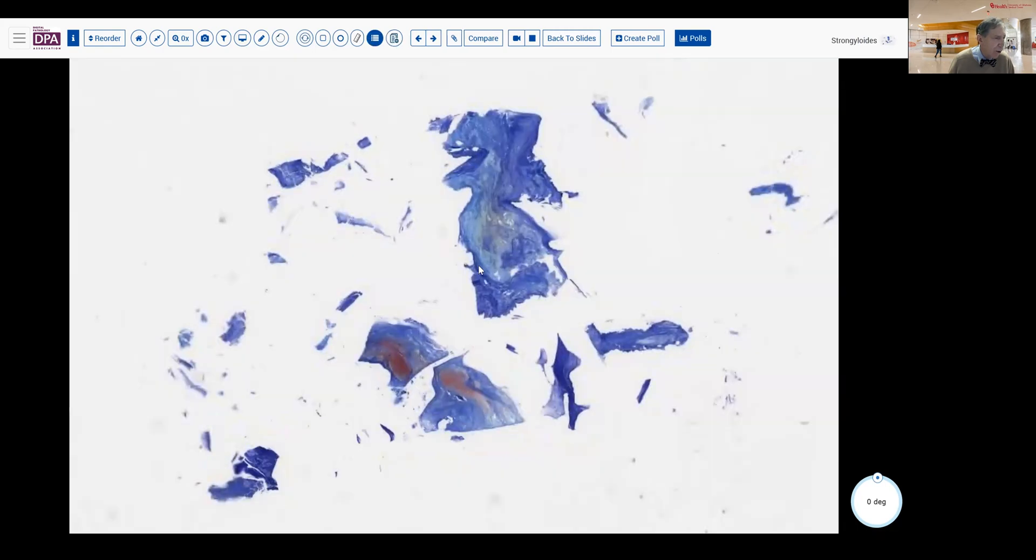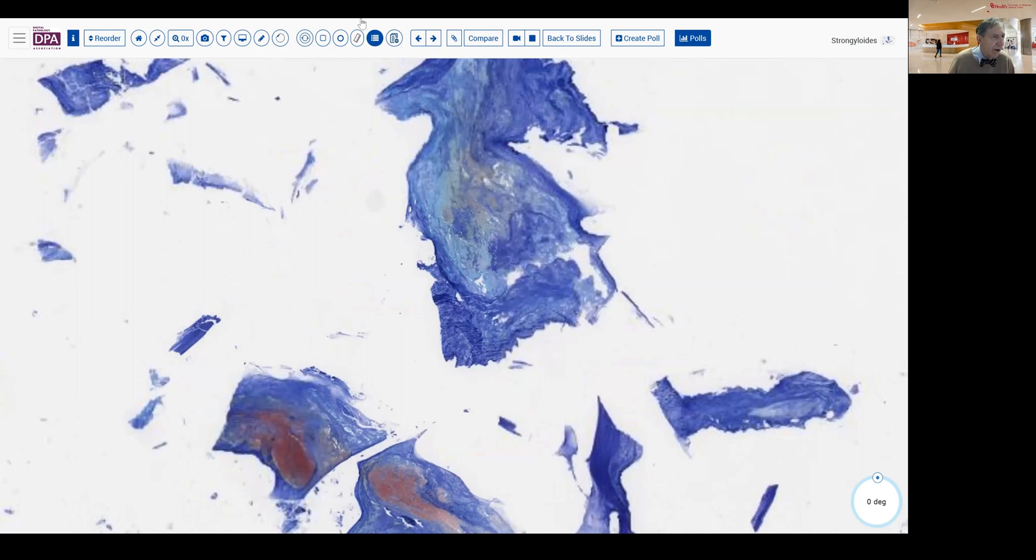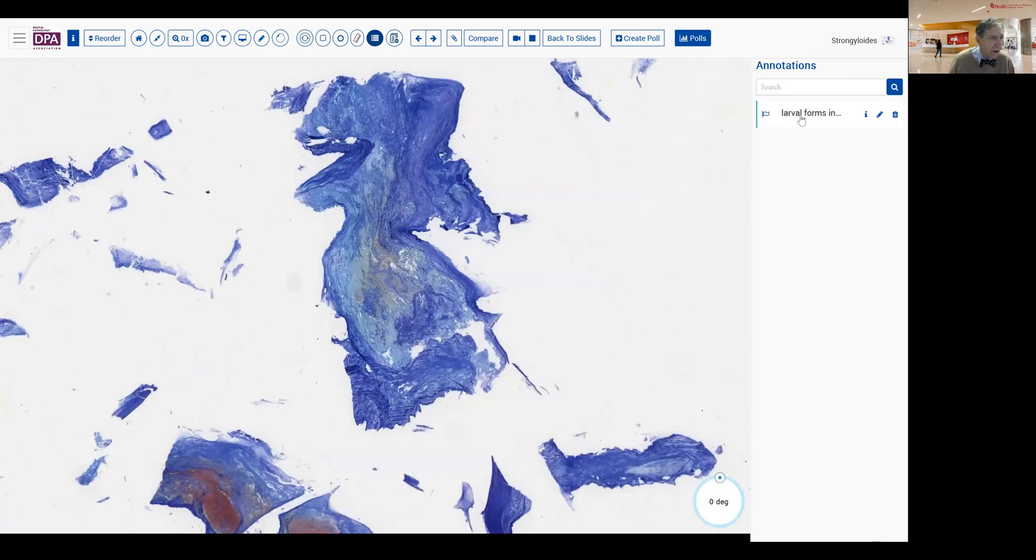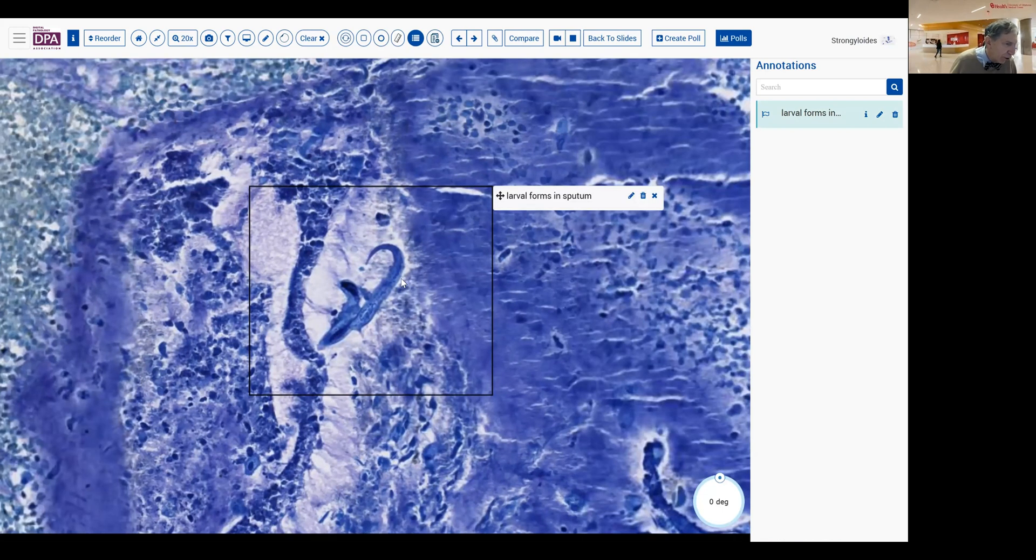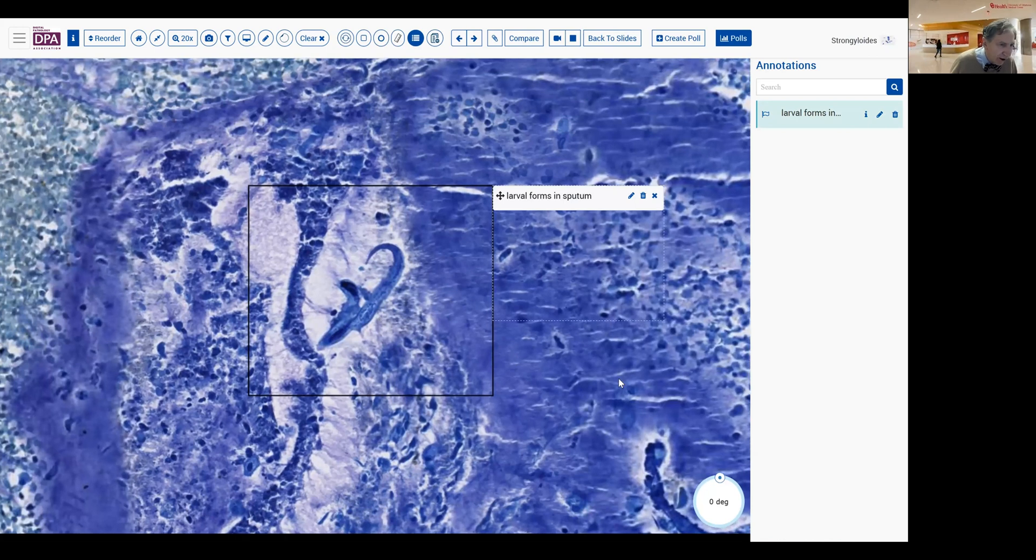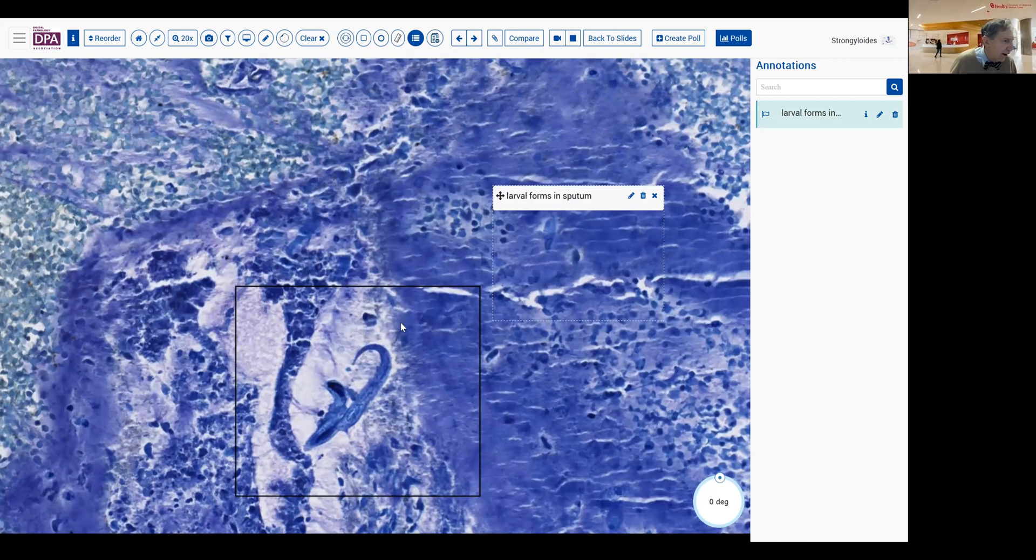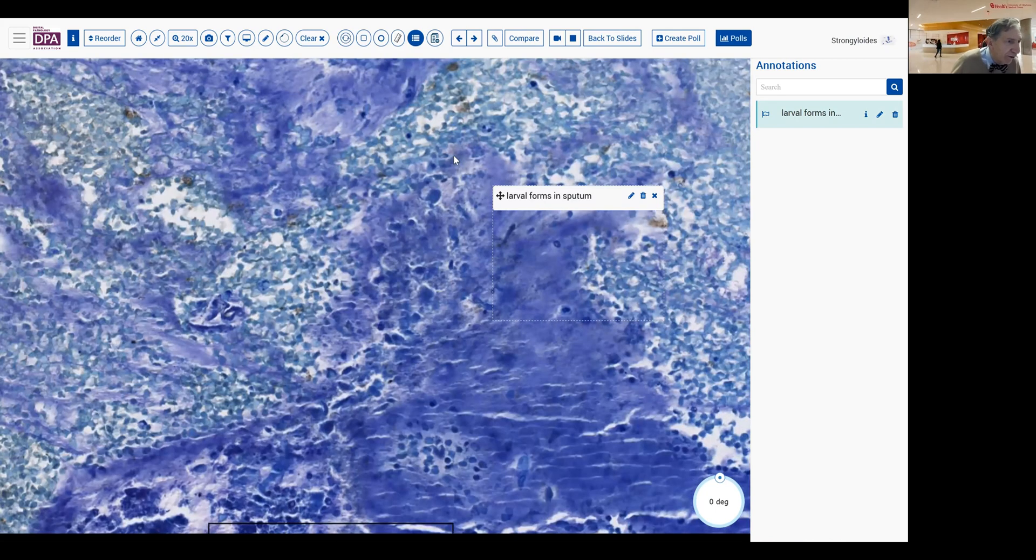Now, let's just take a look at what it looks like in sputum. Here's a sputum sample stained with the Giemsa technique, and we'll go right to the organisms here. As you can see, the full organism has a pointed tail, and various internal structures can be identified. And you might also be able to identify other forms in here as well.